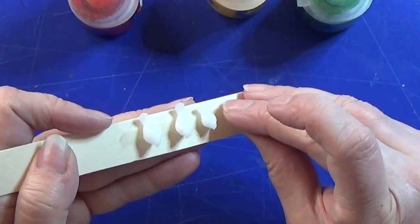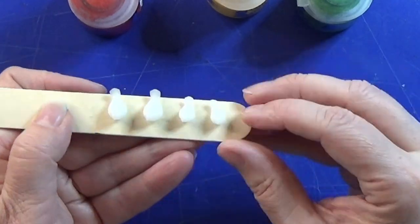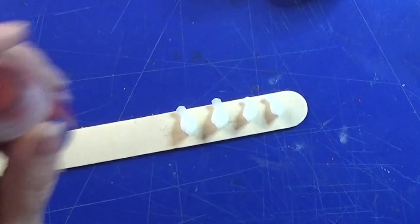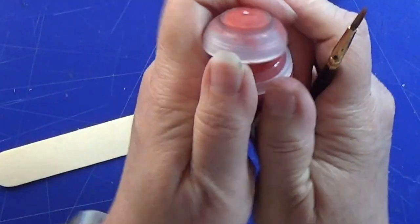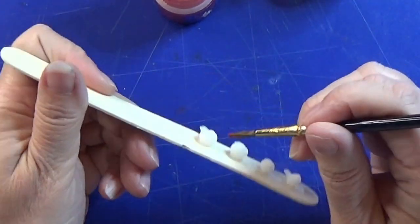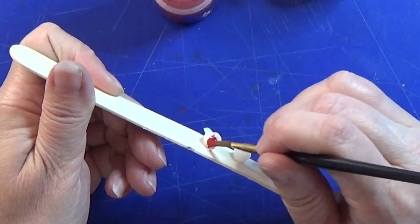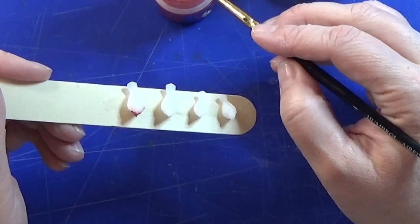I printed them out on my Photon resin printer and I made them in two different sizes. I am placing these birds that I printed onto a piece of double-sided tape.